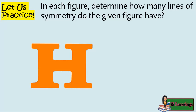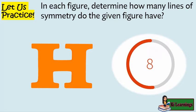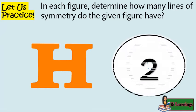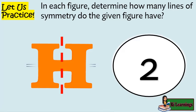How many lines of symmetry does the given figure have? I will give you 10 seconds to answer, and the timer starts now. And the answer is 2 — one vertical and one horizontal line of symmetry.